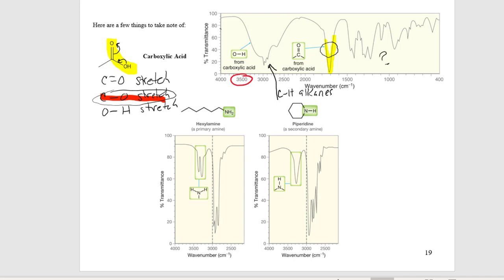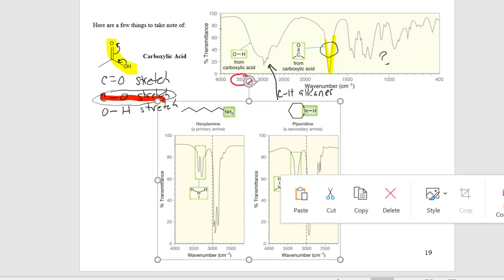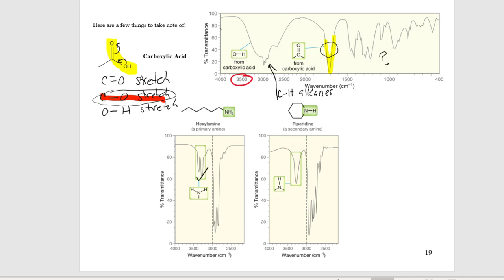For amines: they can also hydrogen bond, though not as strongly as oxygen since nitrogen is less electronegative, so we see some broadness. Importantly, for every hydrogen on the nitrogen you see its own N-H peak. A primary amine with two hydrogens shows two N-H peaks; a secondary amine with one hydrogen shows one mildly broad peak.